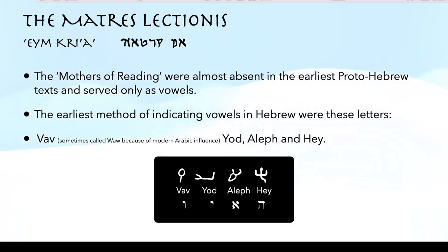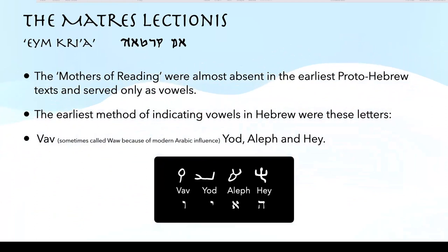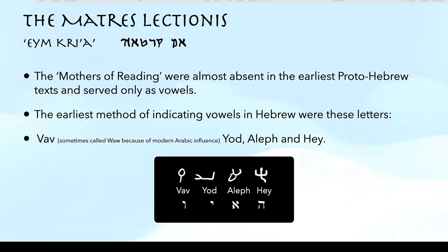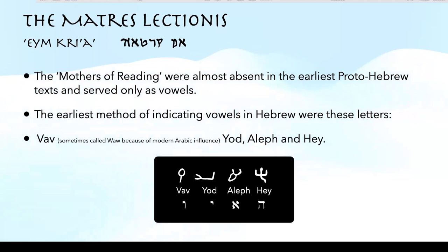In Hebrew they're called imot kria — same thing, mothers of reading. For those of you who have some Hebrew background, you see that root word kara — to call, to speak. The mothers of calling, the mothers of reading. Matres lectiones, of course, is Latin. They were called that because they kind of supported and filled in the gaps between these consonants. There were four of them: the Vav — and sometimes they call it a Waw — Nehemia Gordon has a great teaching on how that comes from modern Arabic influence rather than ancient influence. In any case, the Vav.